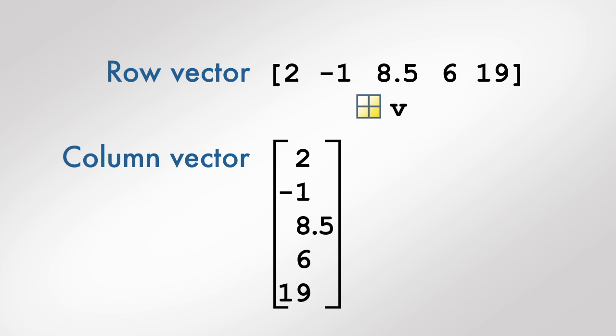We can perform this conversion by using the transpose operation. The transpose operation converts a row vector into a column vector while preserving the order of elements.